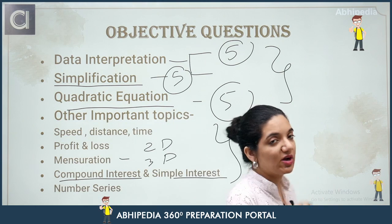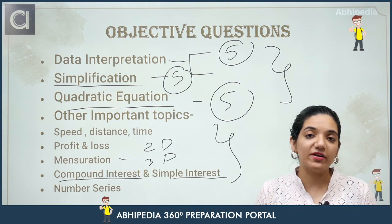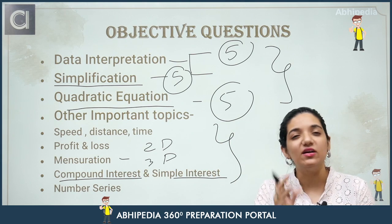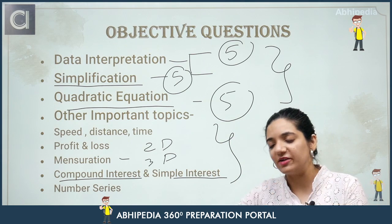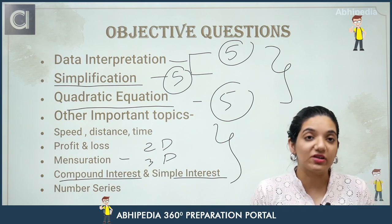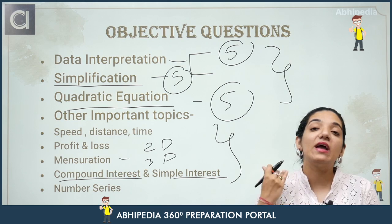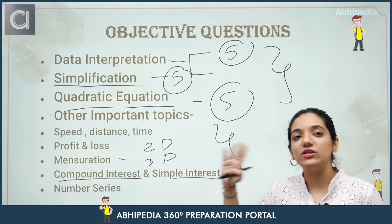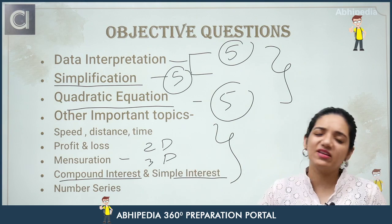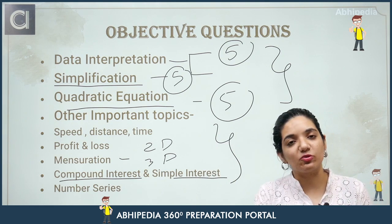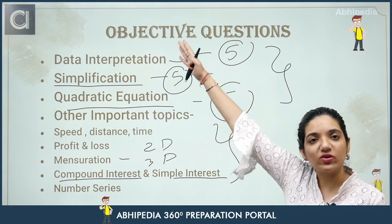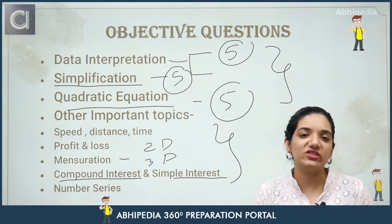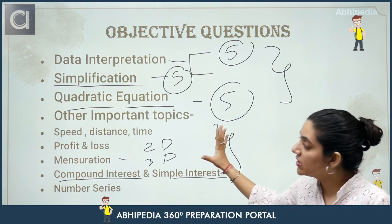Speed, distance and time includes upstream, downstream, and other speed-based concepts. Profit and loss, mensuration, CI/SI, and number series each typically come as single questions — one mark each. Keep the marking scheme in mind and think about how many questions you can accurately attempt. Focus on accuracy — how many questions can you correctly attempt? This is what matters most. That covers Quant.